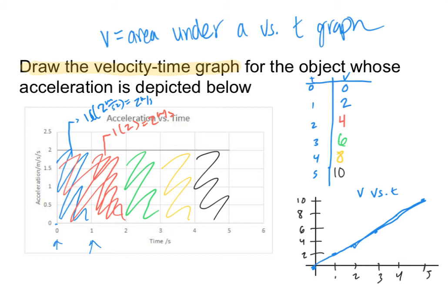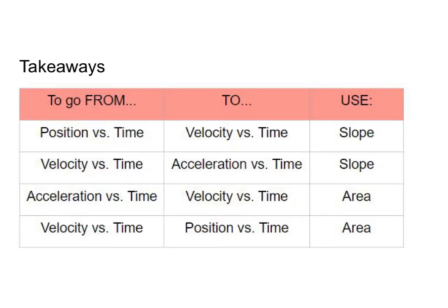This process is very similar to how we found position using a velocity-time graph. Here are the takeaways: when going from a position versus time graph to a velocity versus time graph, we use slope. Likewise, going from a velocity versus time graph to an acceleration versus time graph also uses slope. The way to remember it — when you add more time to the denominator, going from meters to meters per second to meters per second squared, you use slope.